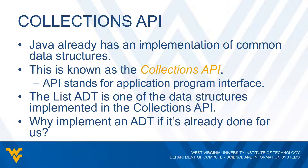So why would we need to implement an ADT if it's already given for us? If Java already provides several different types of interfaces, collections, and classes for implementing these different data structures, why not just use those instead of implementing them ourselves? For the purposes of this class, you will be asked to implement abstract data types without the Collections API, because we need to make sure you actually understand what's going on with these different operations and data structures. But afterwards, you can freely use the Collections API.